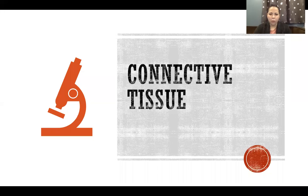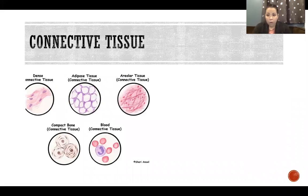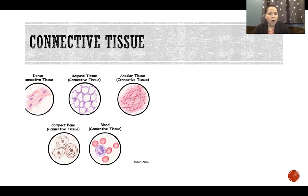Hello, in this video I'm going to talk about connective tissue. So of course we have four tissues in the body: connective tissue, epithelial tissue, muscle tissue, and nervous tissue. All of the many specific types of tissues in the body fall within one of those four categories.